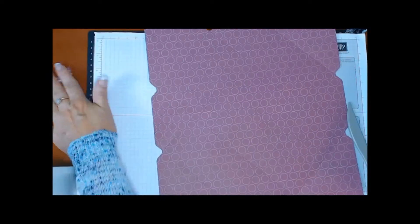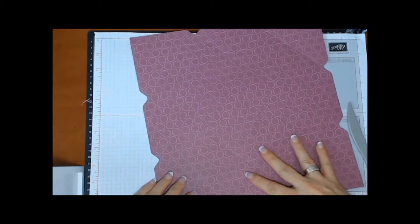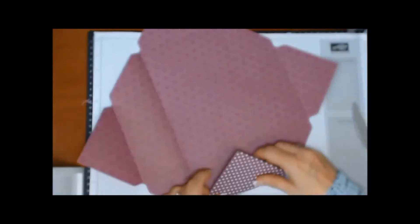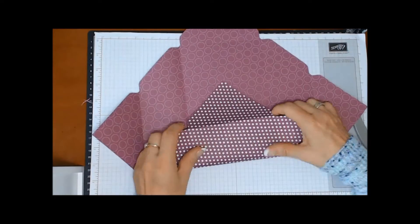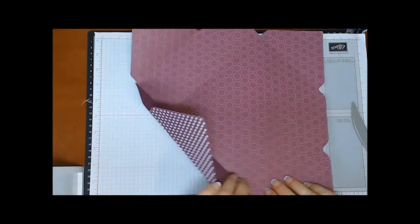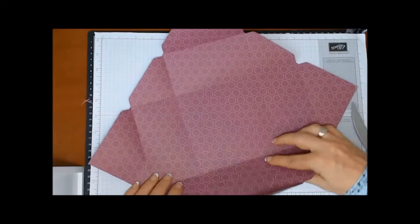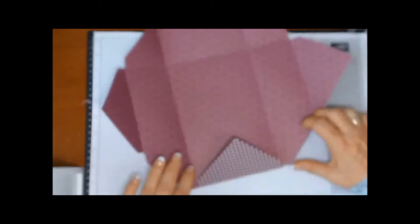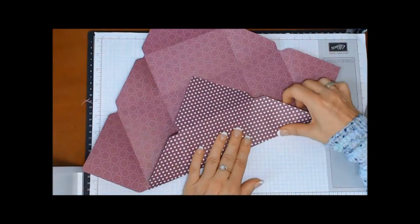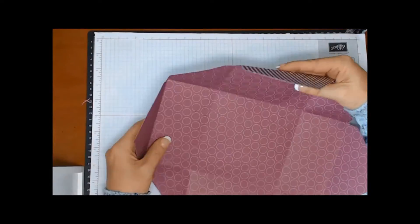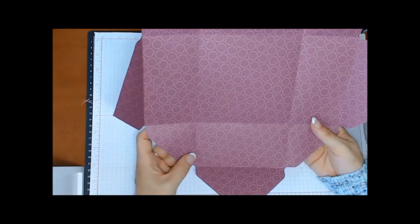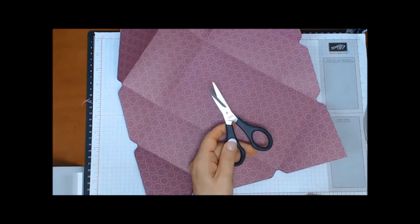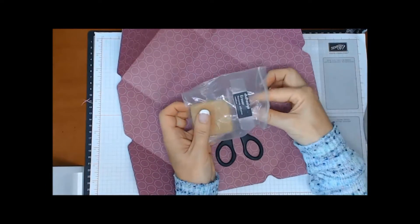So you can move that away and you can see where the score lines are coming in and how the box is going to take shape. Now don't use a bone folder if you're using designer series paper. If you're making this out of cardstock by all means use your bone folder, but with designer paper you're going to find it'll just tear, so you only need to score it with your fingers. So when all the score lines have been folded up, you can kind of get an idea of how the box is going to look.